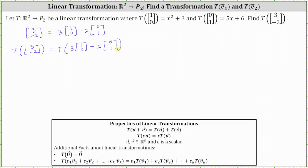Using the first property, we can write the transformation of a difference as a difference of transformations, which gives us: the transformation of the vector (3, negative 2) is equal to the transformation of three times the vector (1, 0) minus the transformation of two times the vector (0, 1).